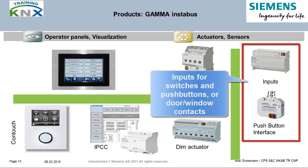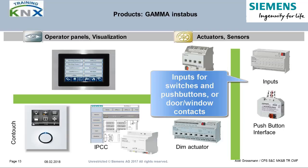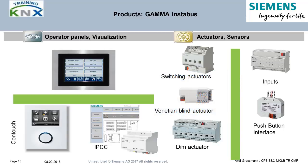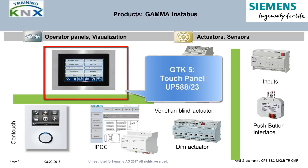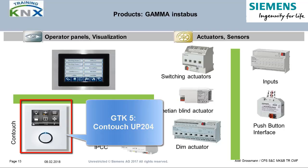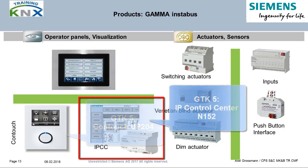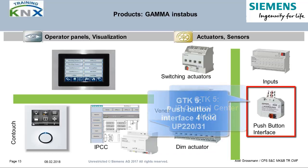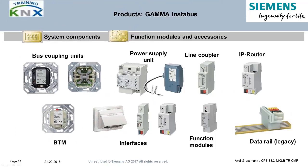Inputs are also necessary everywhere — to enable regular switches to operate on the bus or to be used as monitoring contacts, for example for auxiliary switches on MCBs, or for window and door monitoring. In the GTK5, the included input devices are: Touch Panel UP588-23 for 24V operation, Room Control Unit CONTOUCH UP204, IP Control Center N152, and Push Button Interface 4V UP220-31.